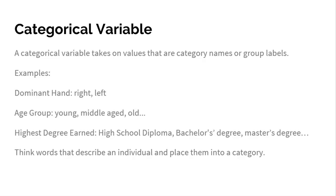Another example is the highest degree you have earned. Do you have no diploma at all? High school diploma? A bachelor's degree? A master's degree? It's a category that you go into. The best way to understand a categorical variable is think words that describe an individual and place them into a category.